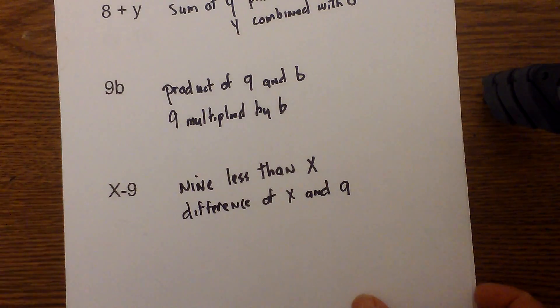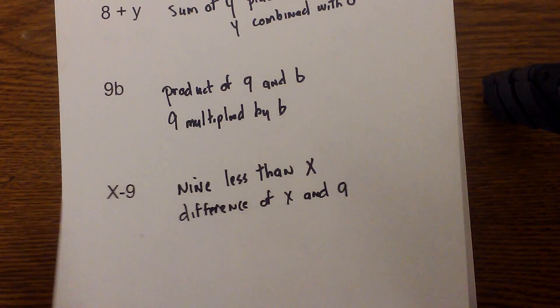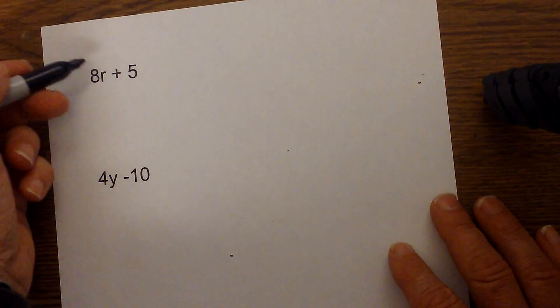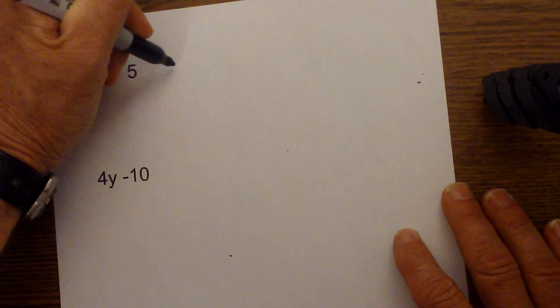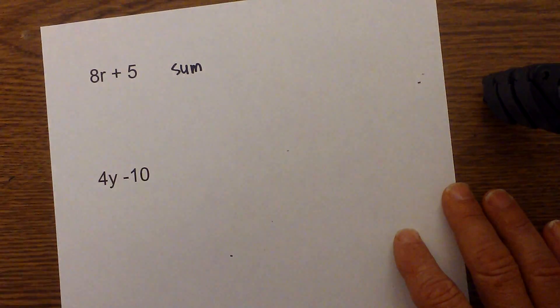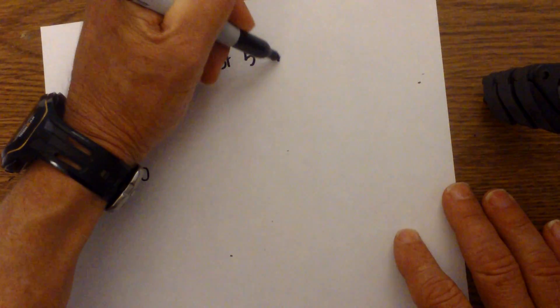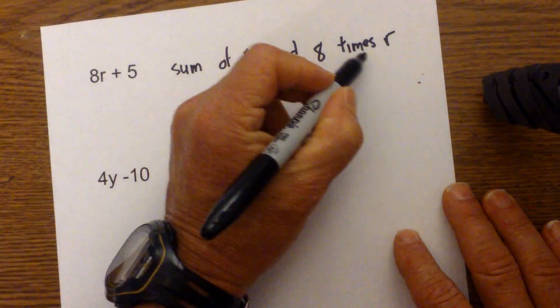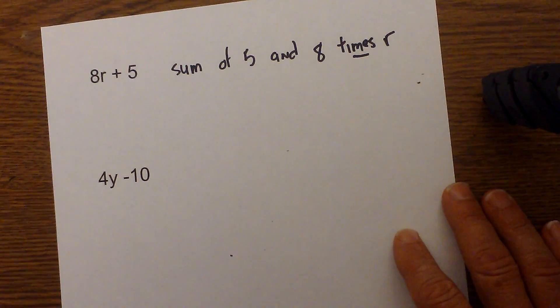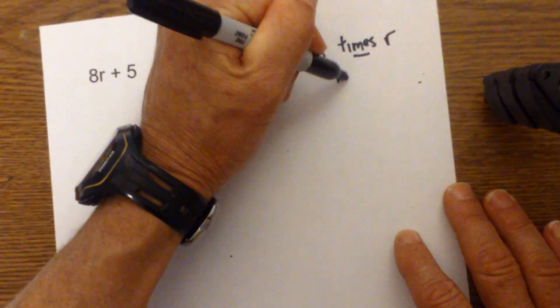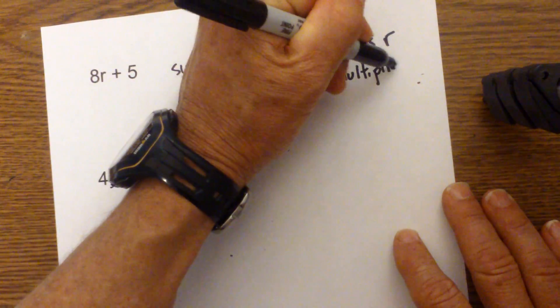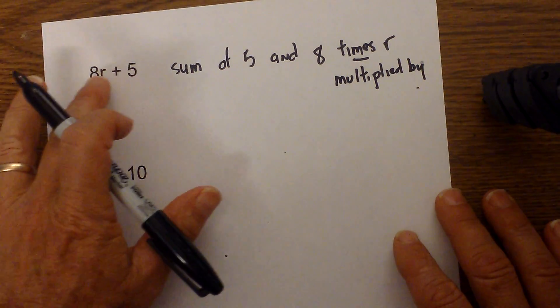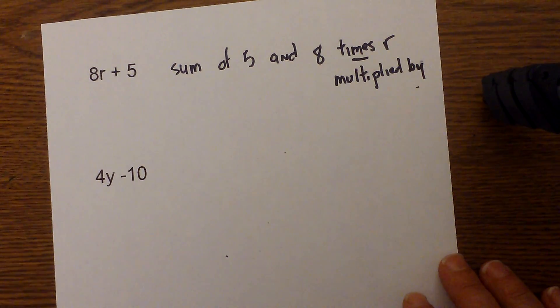Again, I'm using this sheet and I'm just plugging in words that represent the correct math operation. Let's go with two more quickly. This one is a little tricky because you have multiplication. So why don't we try the sum, which tells you that we're going to add, 'sum of 5 and 8 times r'. If you don't like the word 'times', you could use 'multiplied by r', or any of these terms that represent multiplication, because 8 times r, that's multiplication.